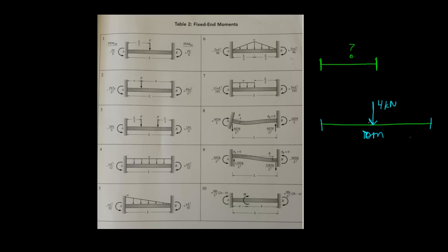So four kilonewtons applied directly at the middle, and we wanted to calculate the moments, the fixed-end moments here at A and here at B. So it's 10 meters in length, there's four kilonewtons applied directly in the middle. The fixed-end moment on the left side, well, if you look at this chart, it's actually number one here.